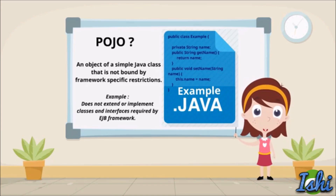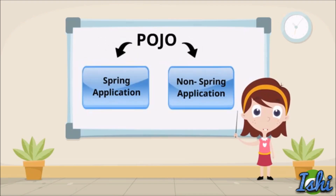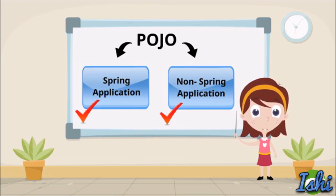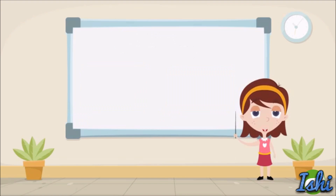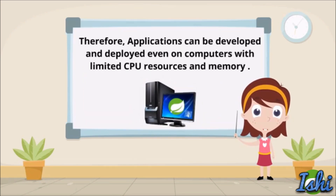Let me take an example. If we consider the EJB framework, it has its own framework-specific classes and interfaces, and EJB components should extend or implement these EJB-specific classes and interfaces. But a POJO is not bound by such restrictions. In addition, POJOs can function equally well in Spring applications as well as in non-Spring applications. These POJOs make Spring lightweight, which allows the use of lightweight servlet containers like Tomcat instead of heavy application servers like JBoss. Therefore, Spring applications can be developed and deployed even on computers with limited CPU and memory.